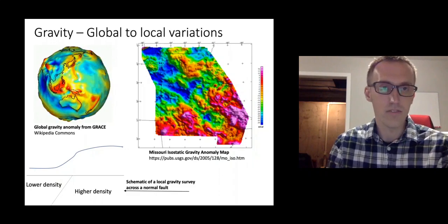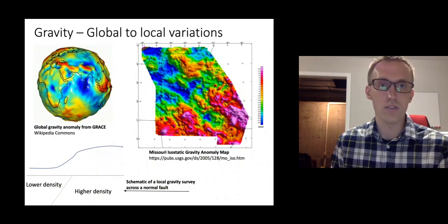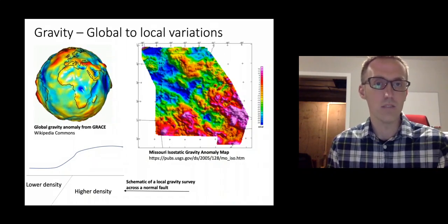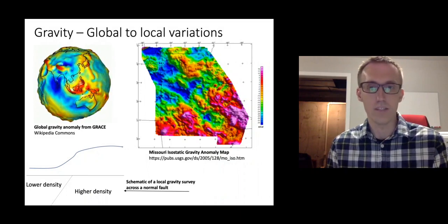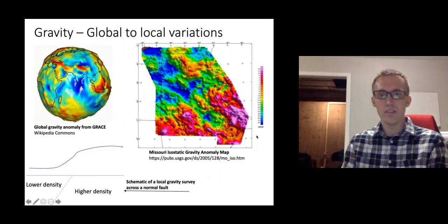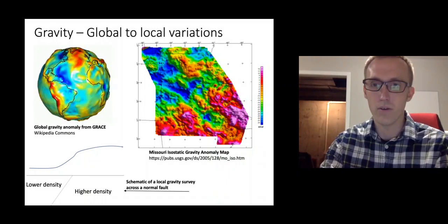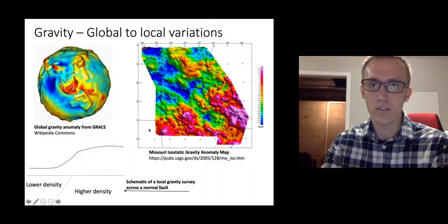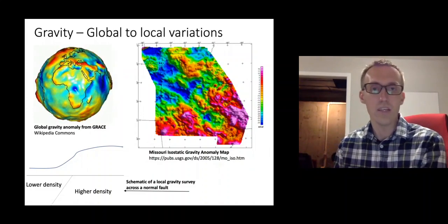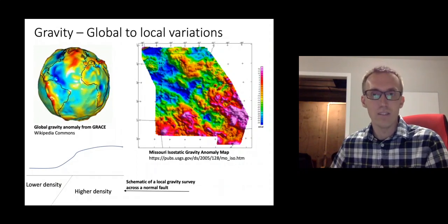Looking at this GIF, the gravity field is very closely related to topography. Over the land areas, places that have mountain ranges tend to have higher gravity — the red color — and places with low elevation tend to be lower gravity anomalies. You also see this at a more local scale. Here we're looking at the whole state of Missouri — this is from the USGS. This is an isostatic gravity anomaly map, and you can see there's something going on in the New Madrid region. There's a topography correlation, but also density variations causing gravity variations — so both density and topography.